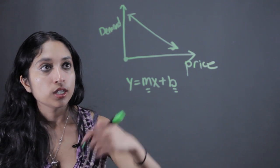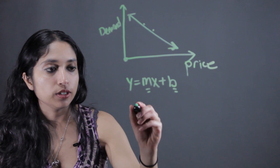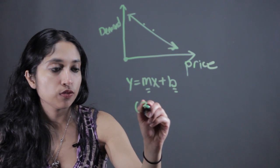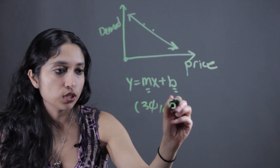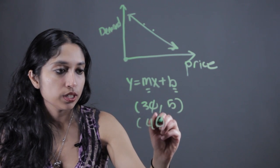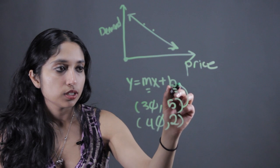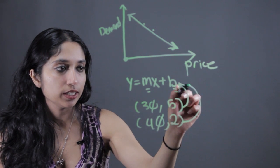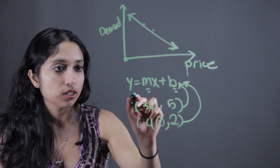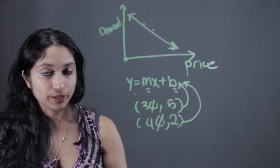Now often, they'll give you two points on this demand curve, like a demand of 30 units at a price of $5 and a demand of 40 units at a price of $2. Then you could use these two points to plug back into the general equation for a line and solve for your demand curve.